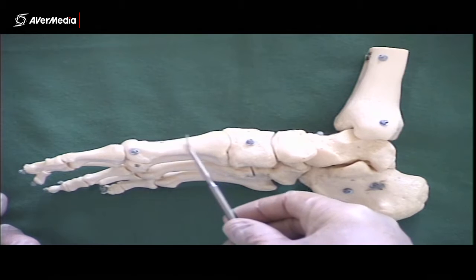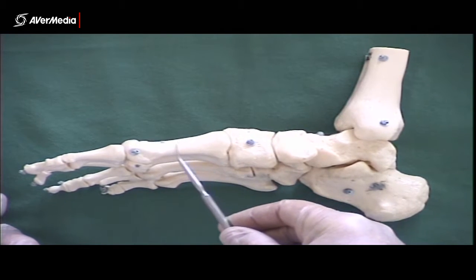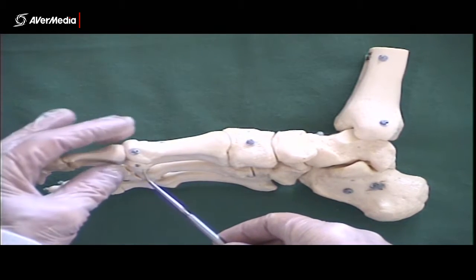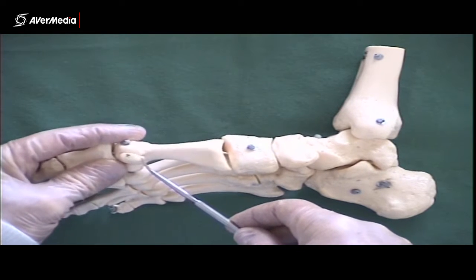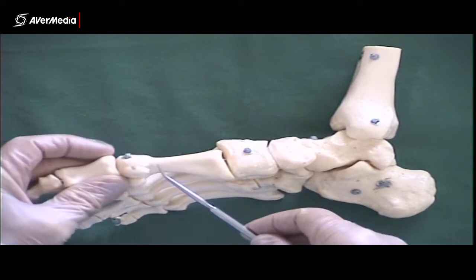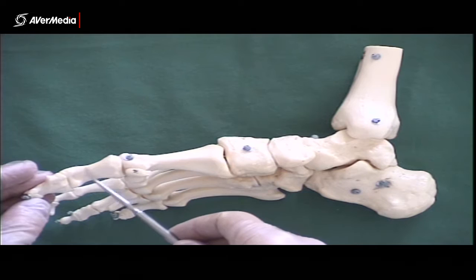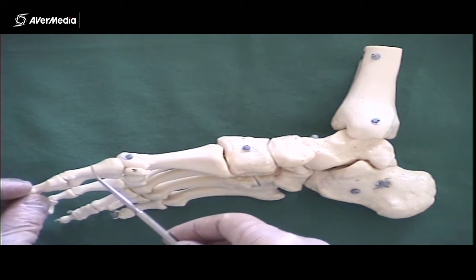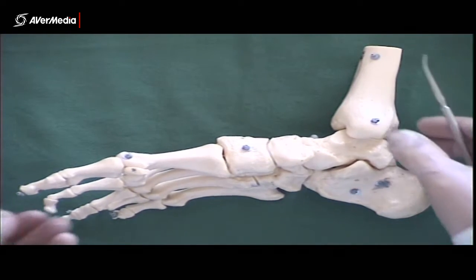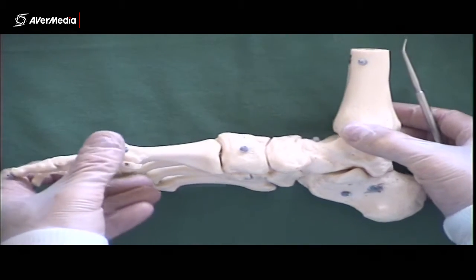Here's the medial cuneiform, first metatarsal with base, shaft, head, and a couple of sesamoid bones here on the inferior surface. Then we've got the phalanges, proximal and distal, with base, shaft, and head.